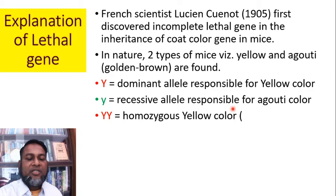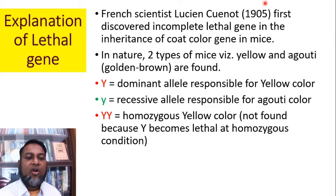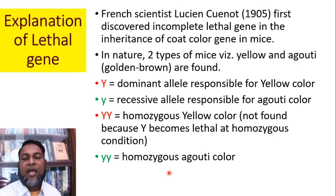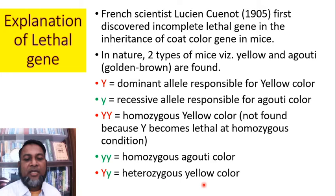Capital Y, capital Y — the homozygous yellow colour — is not found, because capital Y becomes lethal in the homozygous condition. Small y, small y is homozygous for agouti colour. Capital Y, small y heterozygous produces yellow colour mice.